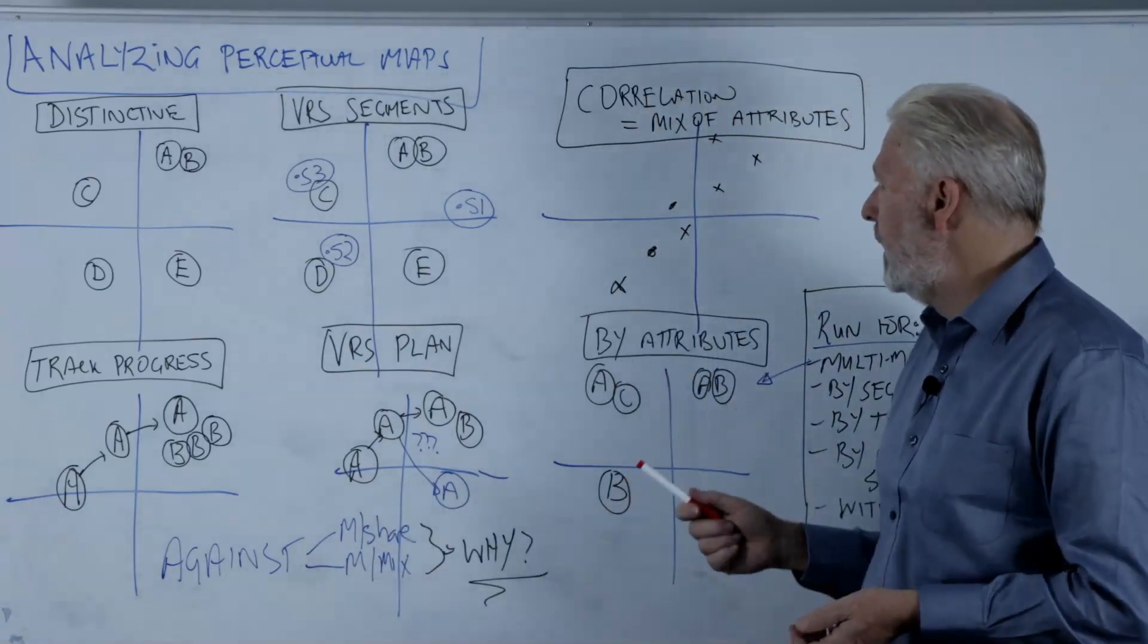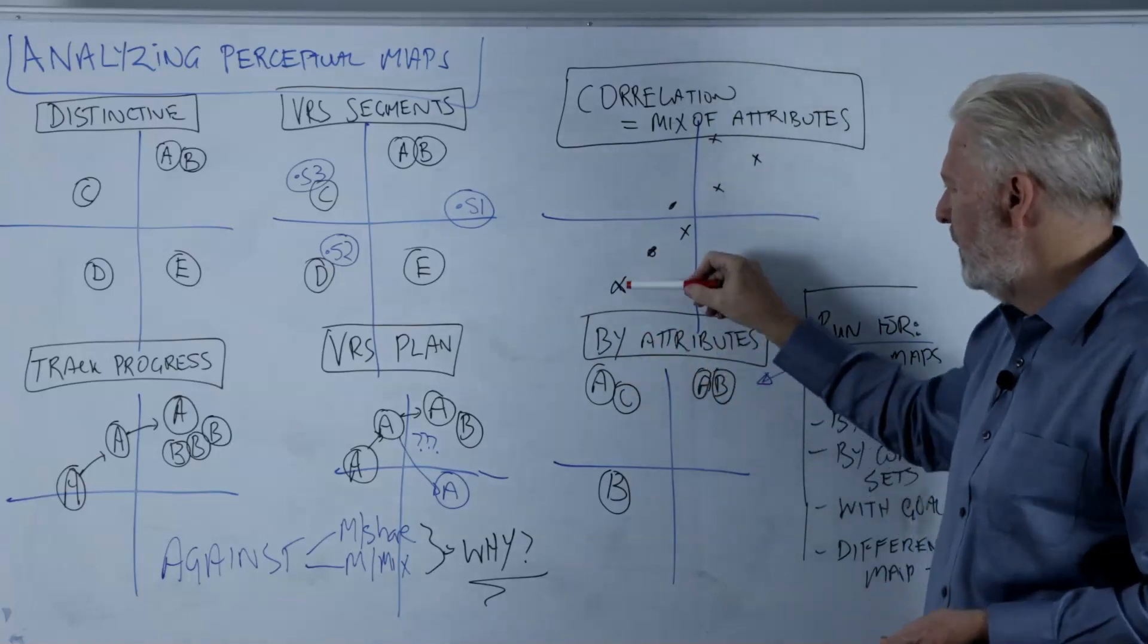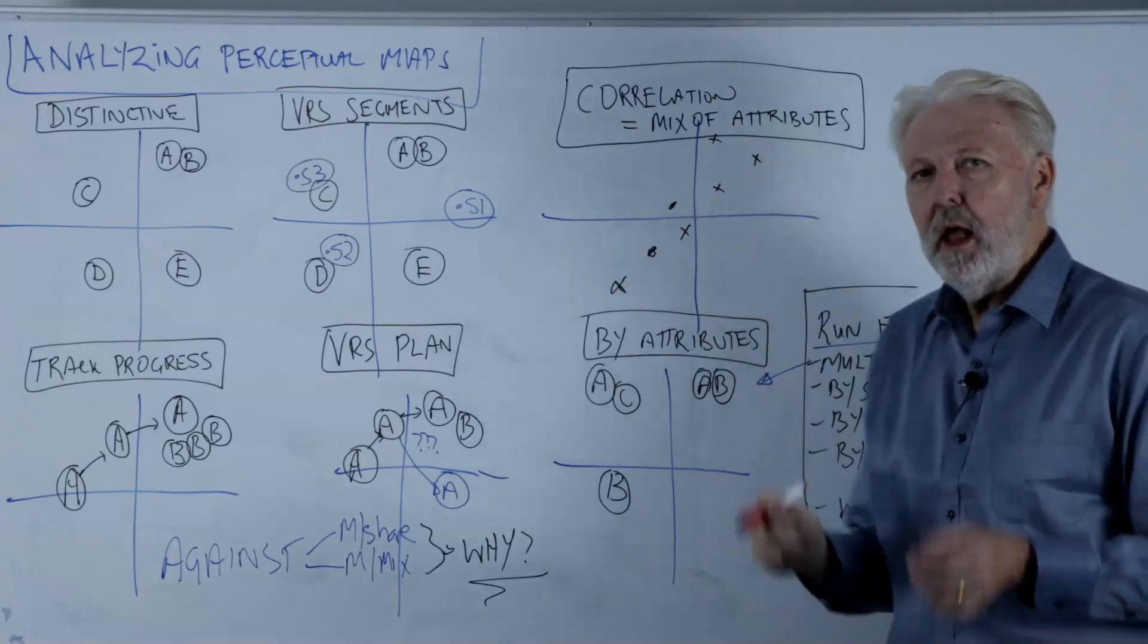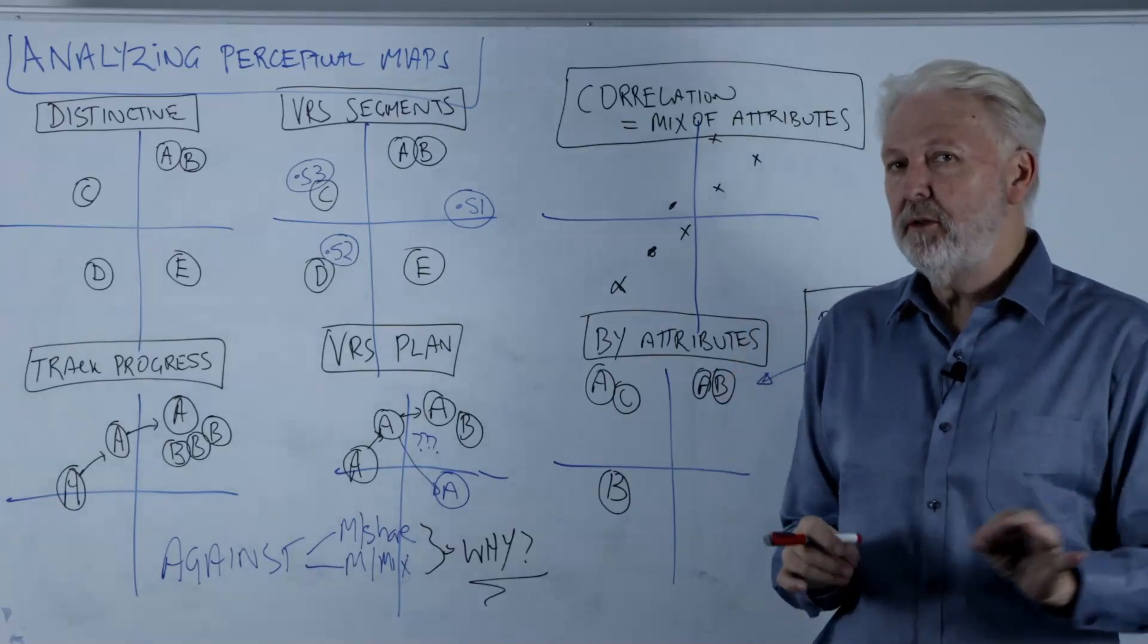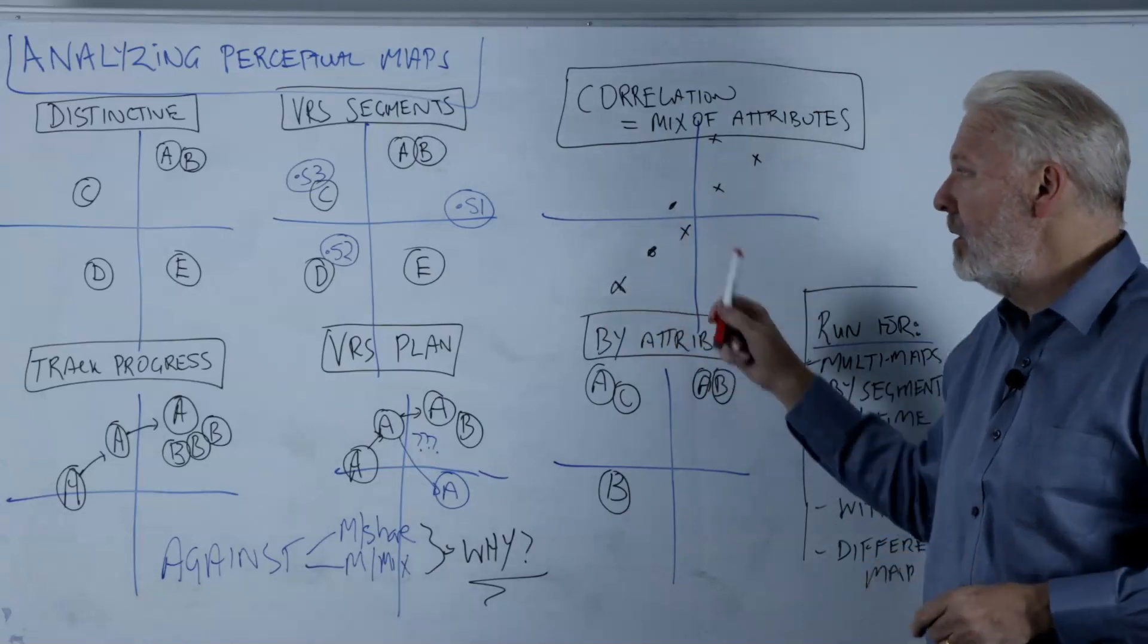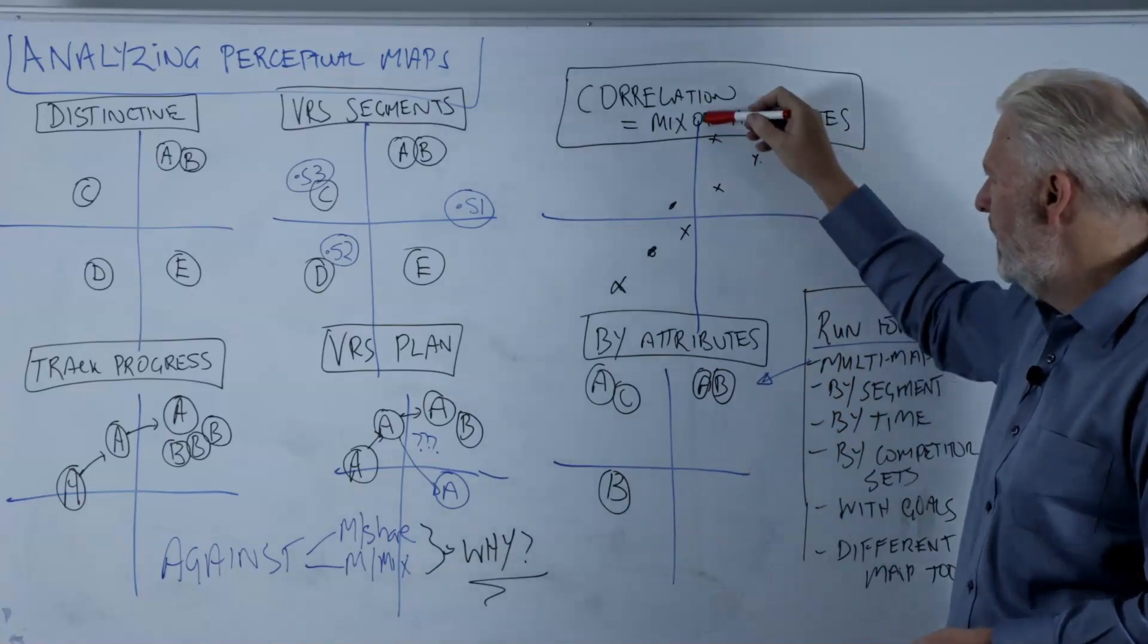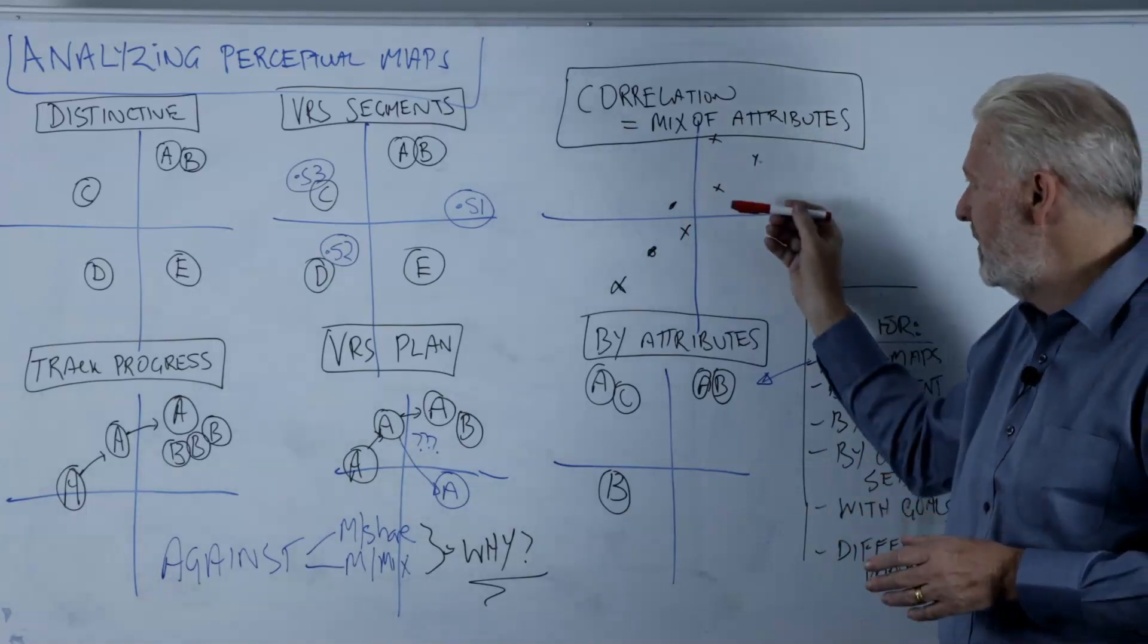A couple of other things to look at. If we ever see a map like this where we've got, these are just the brands, I haven't got the letters, but there's a correlation between these attributes. That tells me that consumers see those attributes as similar in their minds. So that may be helpful information because it's delving into how consumers think. So if we're up here and we're well connected to this particular attribute, which is essentially the same as I suggested.